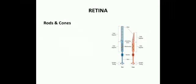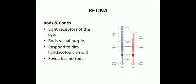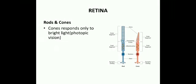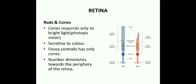The rods and cones are the light receptors of the eye. Rods contain the pigment visual purple and respond to dim light, providing scotopic vision. The fovea contains only cones. Cones respond only to bright light, providing photopic vision, and are sensitive to color. The number of cones diminishes towards the periphery of the retina, where there are more rods and fewer cones. In the physiological blind spot, there are neither rods nor cones.